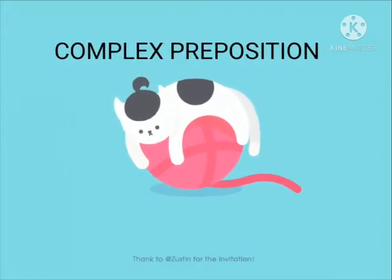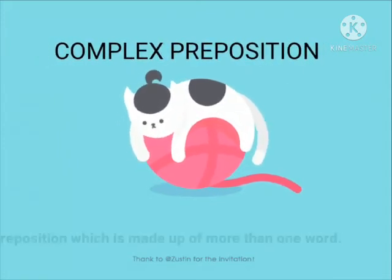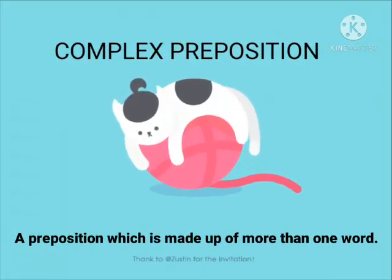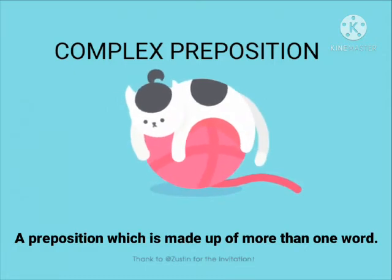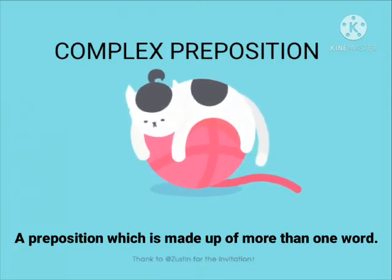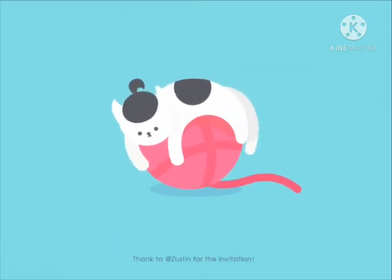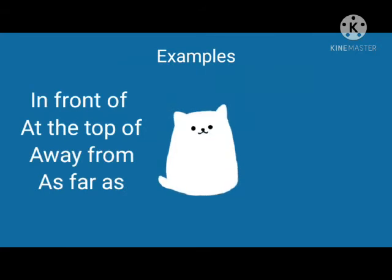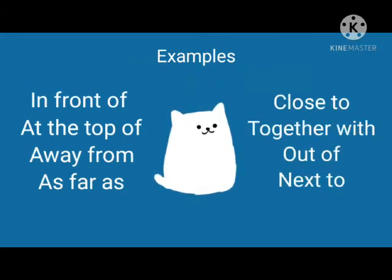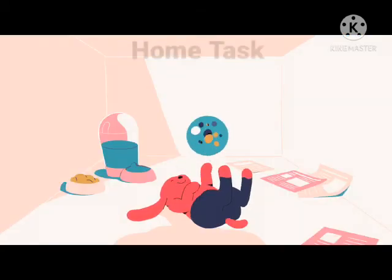Another kind of preposition is complex preposition. A complex preposition is the one which is made up of more than one word. For example: in front of, at the top of, away from, as far as, close to, together with, out of, and next to.